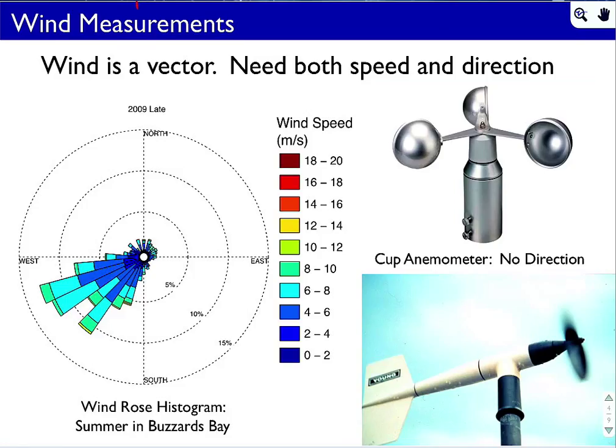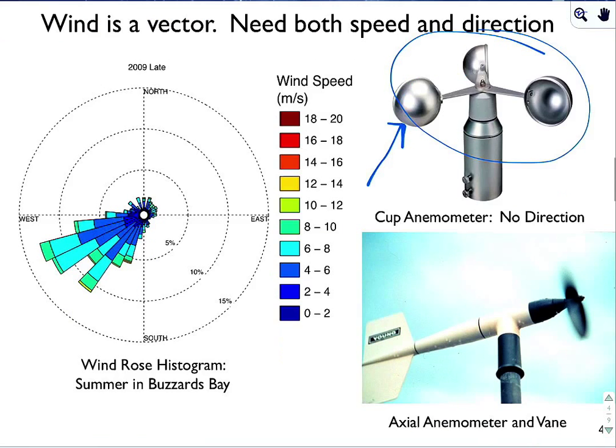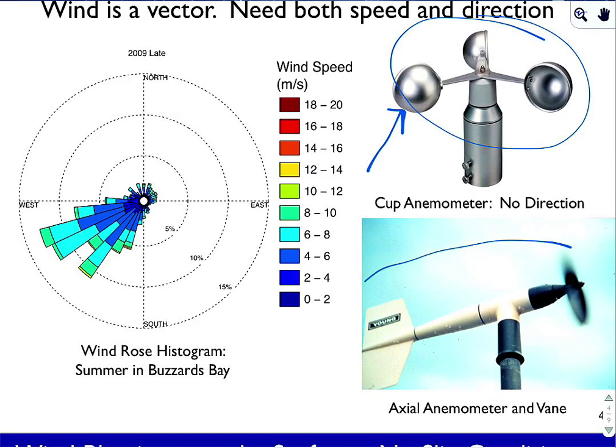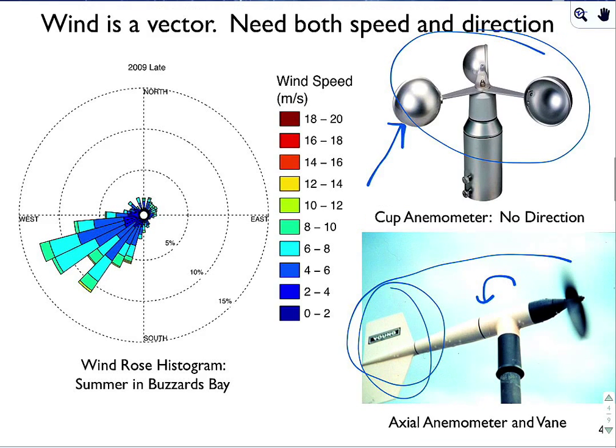Wind measurements. Wind is a vector, so you need both speed and direction. These typical cup anemometers that you see all over the place do not provide direction. It's just a way of correlating spin rate with the magnitude of the wind, so you can measure wind magnitude but no direction. These axial anemometers have a vane on them. The vane keeps it steered into the wind. Inside here is a compass. And once calibrated, this can give direction and heading of the wind, both pieces of information needed to construct the vector.